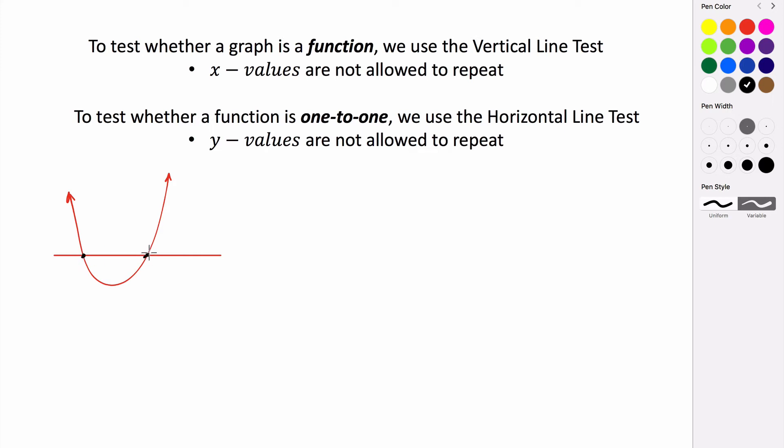But if you have something like a line, just a linear equation, a linear equation is one to one. It passes the horizontal line test. Everywhere that you run a horizontal line, it's never going to intersect more than a single point. So this would be one to one, which means its inverse would be a function.